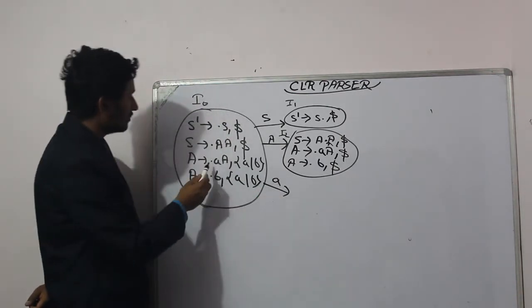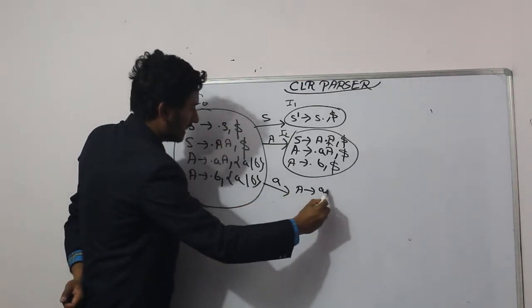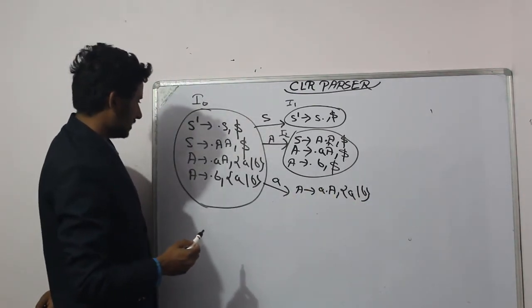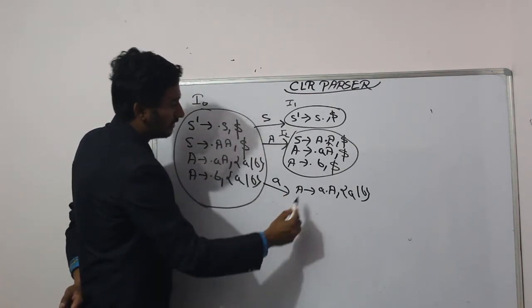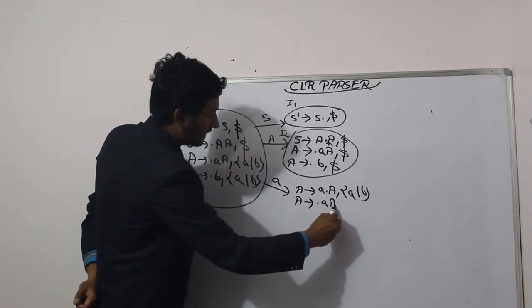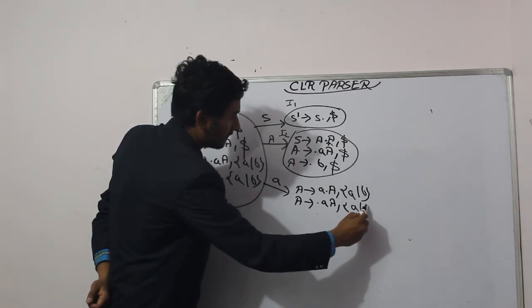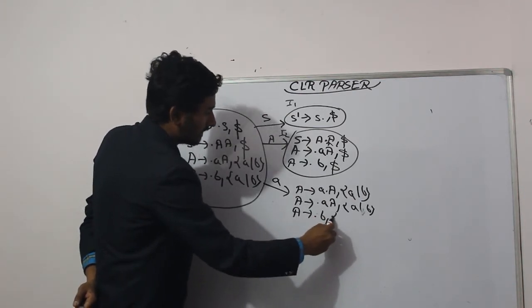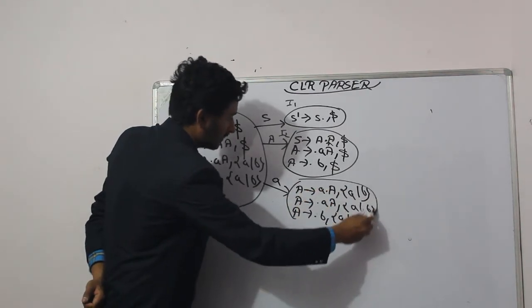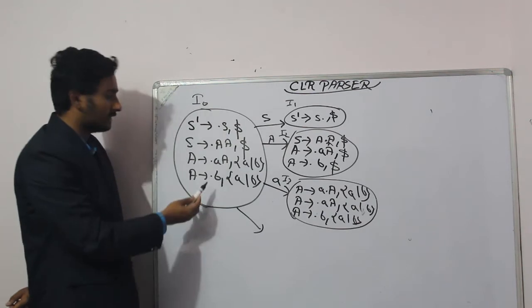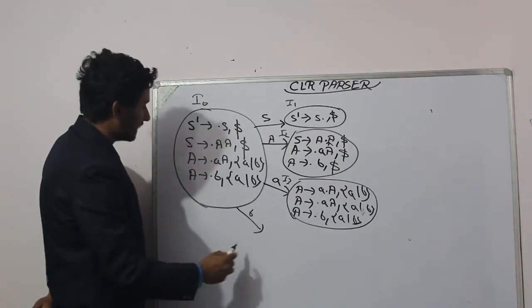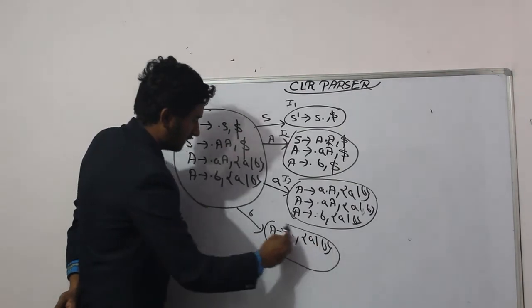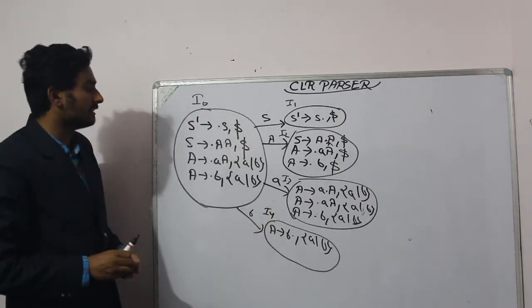From I2, scanning small a gives state I3: A derives a dot A [a/b]. We must expand this non-terminal A: A derives dot a A [a/b] and A derives dot b [a/b]. From I2, scanning b gives state I4: A derives b dot [a/b]. This is a reduce state.